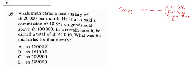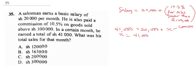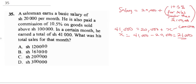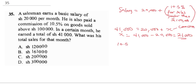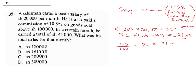His total earnings are 20,000 plus his commission x. Since he earned 41,000 total, that means x equals 41,000 minus 20,000, so his commission was 21,000 shillings. Now we need to find his total sales, knowing that the commission of 21,000 represents 10.5% of sales above 100,000.